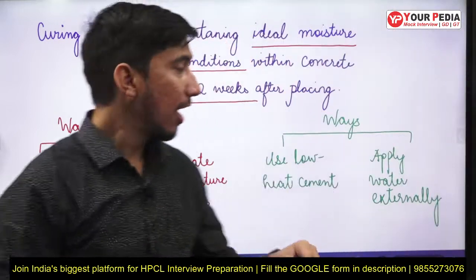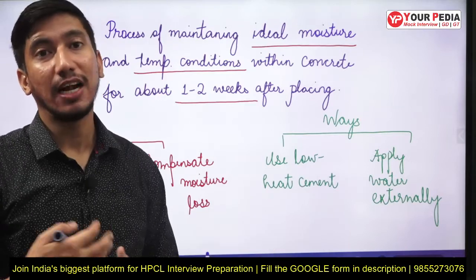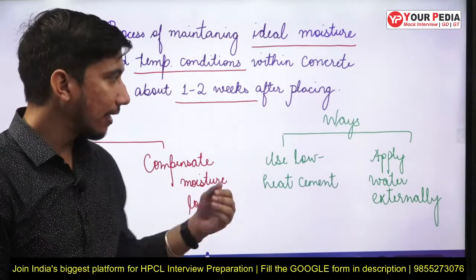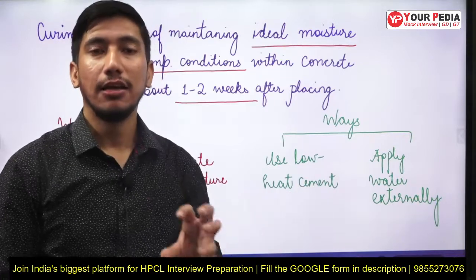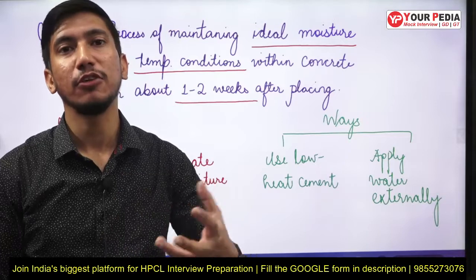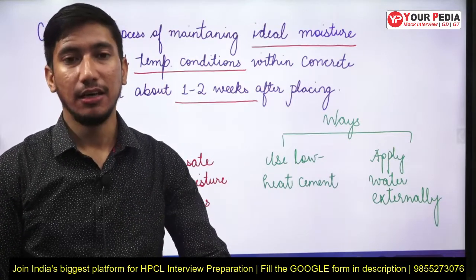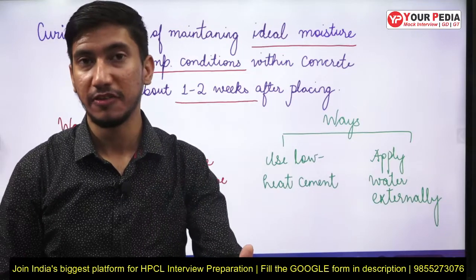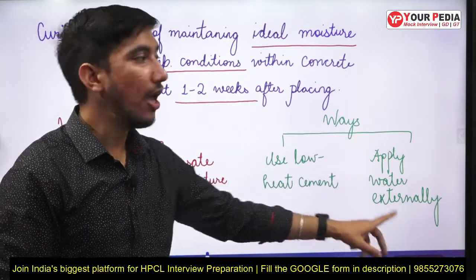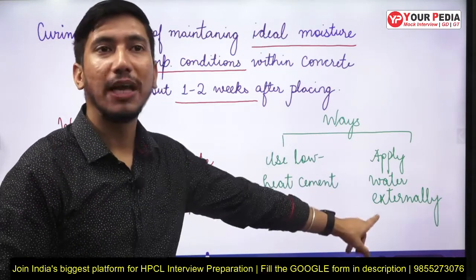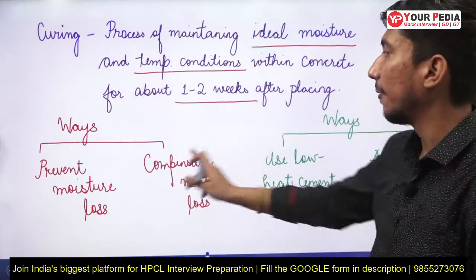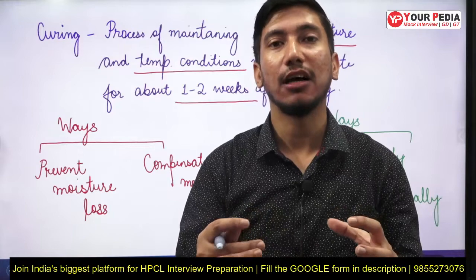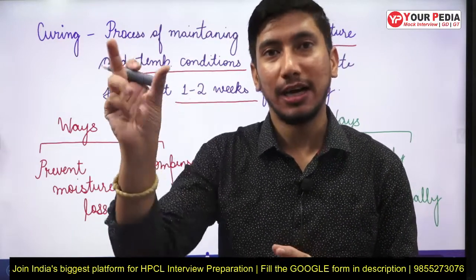To maintain ideal temperature conditions, we have two options: use low-heat cement, which releases less heat of hydration, or apply water externally. Water acts like a coolant — its specific heat capacity is very high, so it absorbs a lot of heat and also causes cooling through evaporation. Applying water externally helps maintain both adequate temperature and adequate moisture conditions.